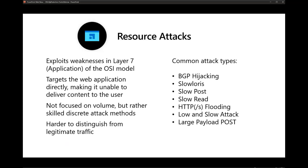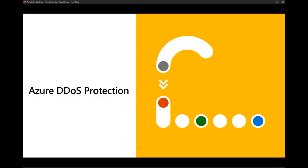Layer 7 attacks are challenging to defend against because the traffic seems very legitimate — it's normal requests for information from a website, just coming in at high volume. DDoS protection by itself does not provide protection against Layer 7 protocol attacks. You also need WAF enabled. In Azure, if you're using Application Gateway or Azure Front Door, you should have WAF enabled. Combined with DDoS protection, you then have defenses against these types of attacks.